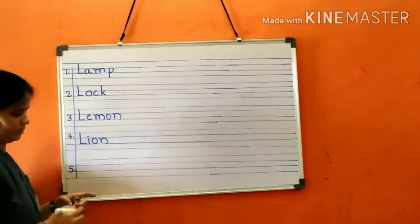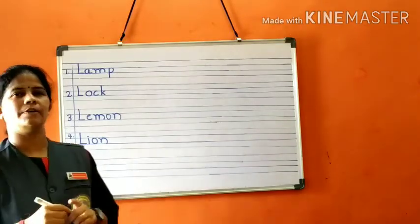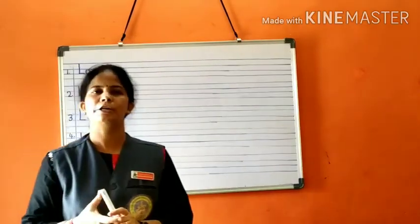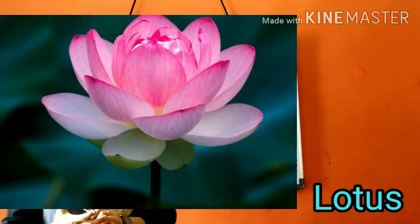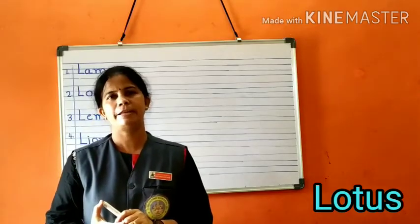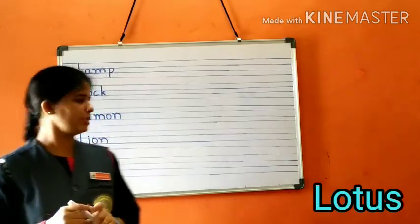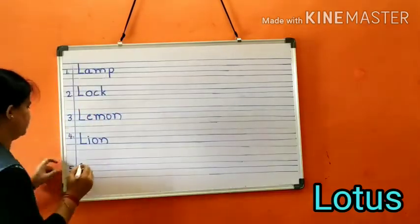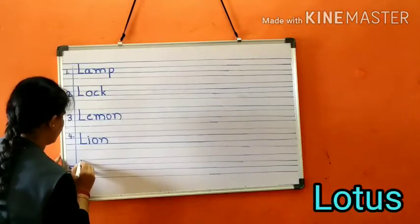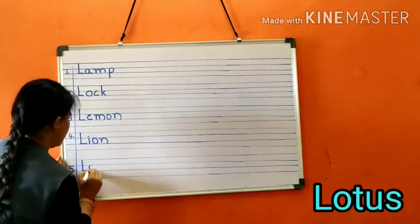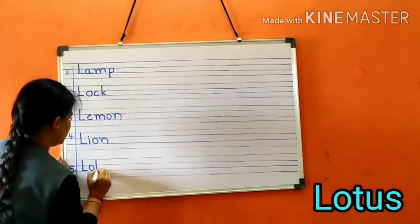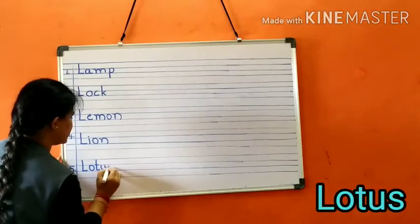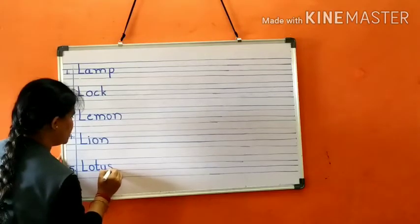Last word is lotus. Lotus means kamadamu. It is our national flower. Shall we write the spelling of lotus children? L-O-T-U-S, lotus.